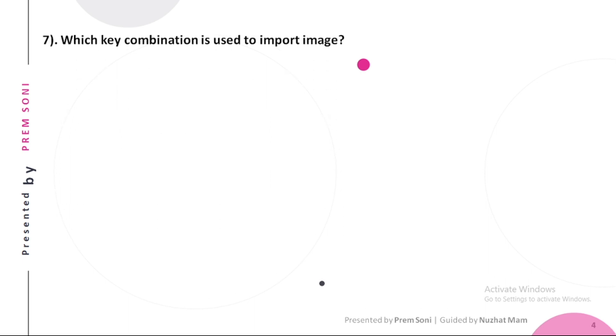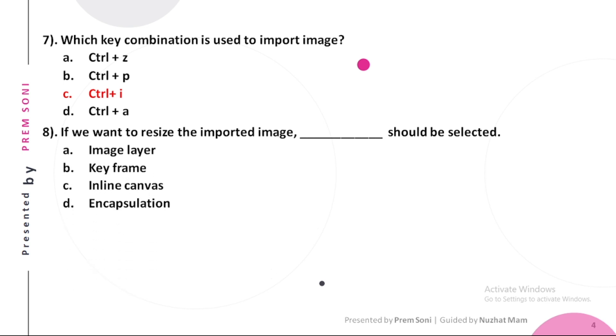Seventh, which key combination is used to import image? Options are: a. Ctrl plus z, b. Ctrl plus b, c. Ctrl plus i, d. Ctrl plus i. The answer is Ctrl plus i. Eighth, if we want to resize the imported image, dash should be selected. Options are: a. Image layer, b. Keyframe, c. Inline canvas, d. Encapsulation. The answer is Image layer.